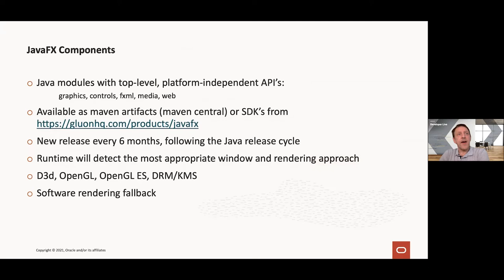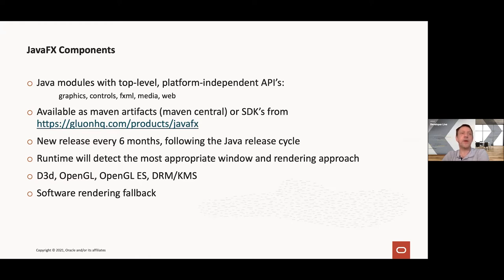JavaFX contains a number of components organized as Java modules, leveraging the Java module system. For example, there's the JavaFX graphics module, JavaFX controls — where controls like Button and Label are available — JavaFX FXML which allows you to declaratively describe the user interface, and JavaFX media and JavaFX web modules. Developers can use the public APIs in those modules, which are available as Maven artifacts downloadable from Maven Central, or as SDKs downloadable from gluonhq.com/products/javafx.